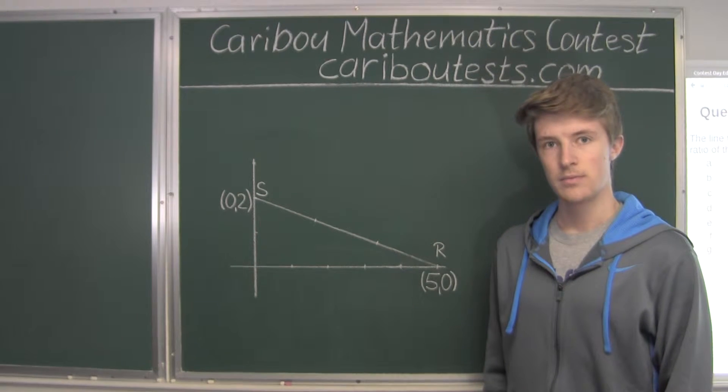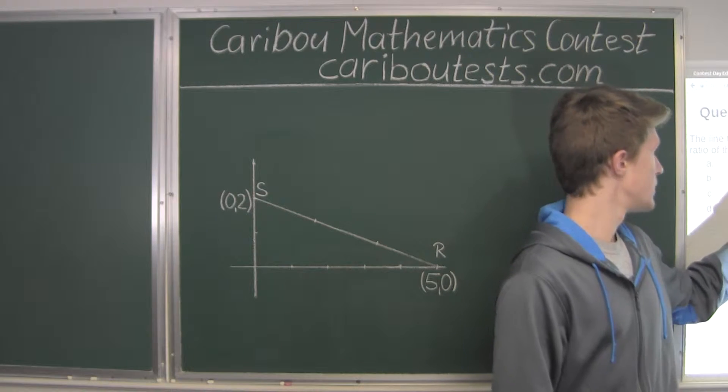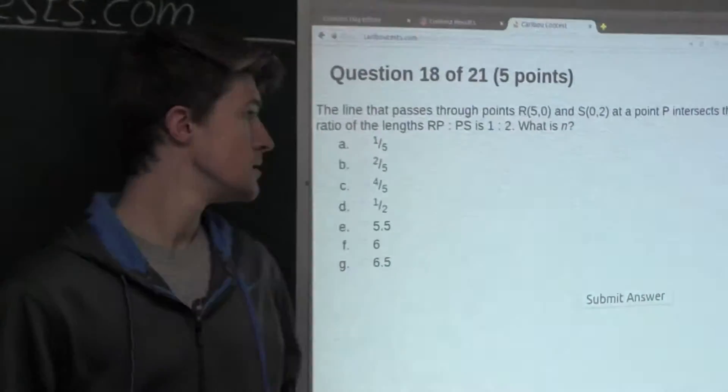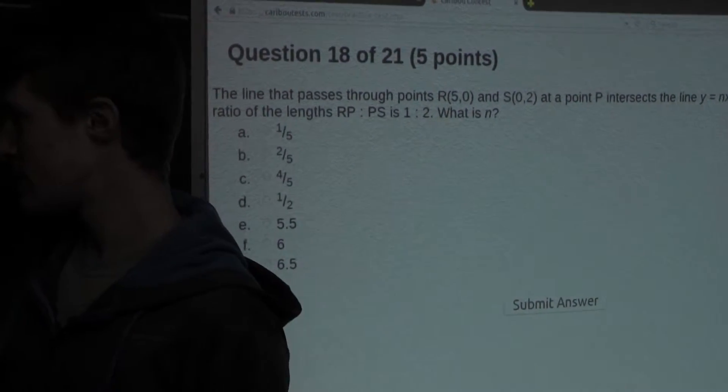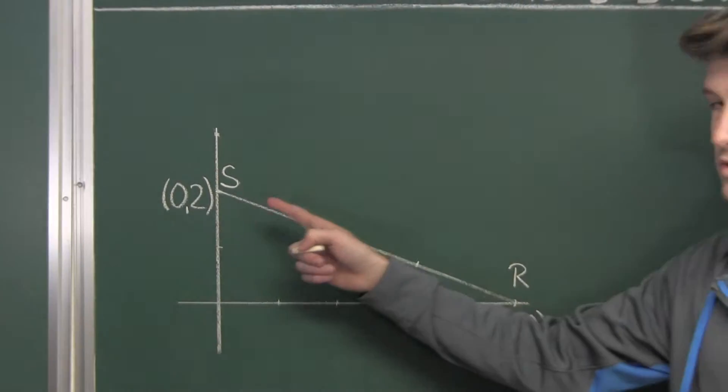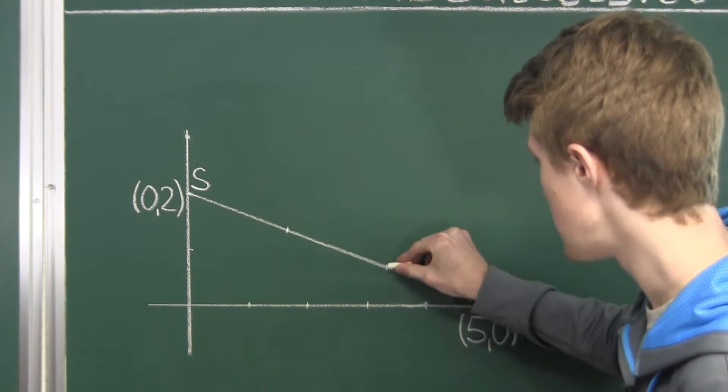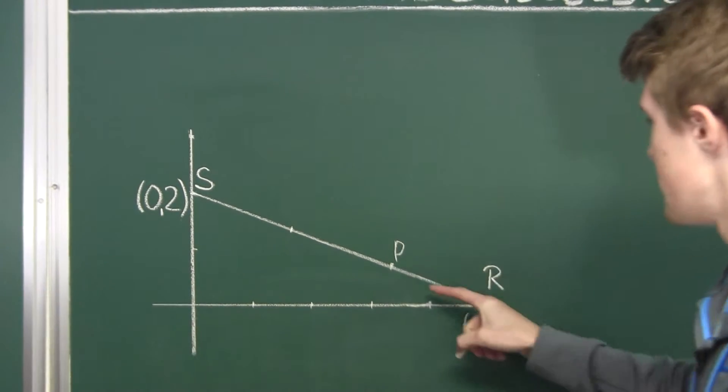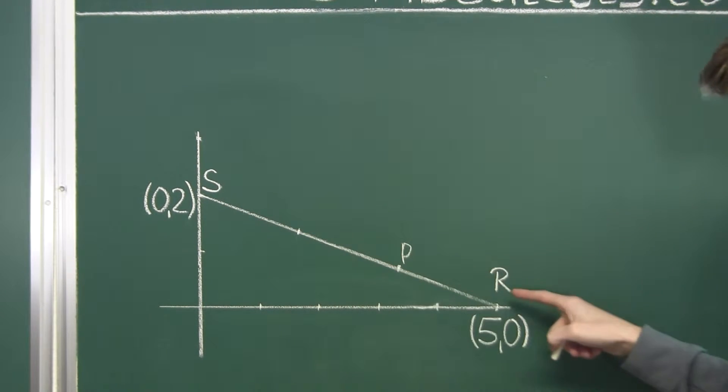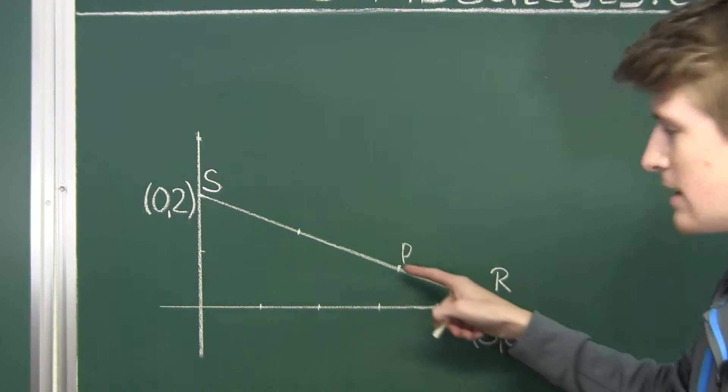And also, for the point P, we know the ratio of RP, so R to wherever P is, to PS, so wherever that P is to S is 1 to 2. So that means that P should be around right around here, where this segment would be 1 half of this segment, where RP is 1 and PS is then 2.